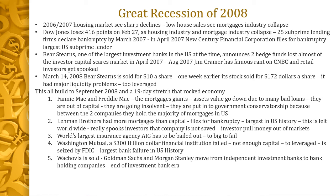Then Washington Mutual, a $300 billion financial institution, basically failed — again, not enough capital, too leveraged. But this one was a retail bank, and the FDIC had to step in. Because people were FDIC-insured they got their money back, but not everyone — at the time the FDIC coverage was only $125,000, so if you had put in $200,000 you lost $75,000. After this, the FDIC raised its coverage amount. Wachovia was sold, and Goldman Sachs and Morgan Stanley decided they couldn't be independent investment banks anymore and converted to bank holding companies under federal regulation — it was essentially the end of that investment era.